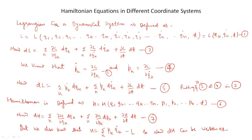Hello everyone, today we will find Hamiltonian equations in different coordinate systems. You know that the Lagrangian for a dynamical system is defined as L equal to L(qk, qk_dot, t), where qk is the generalized coordinate, qk_dot is the generalized velocity, and t is time.